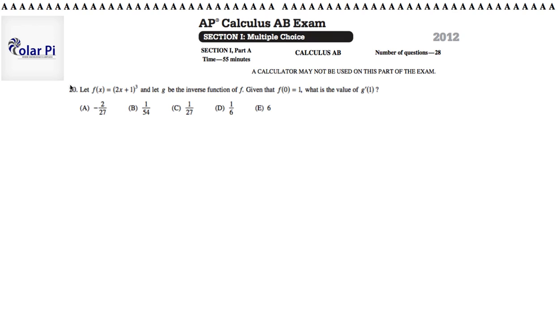Hey y'all, so in this video let's go through problem 20. Problem 20 says let f equal that and g be the inverse function of f. So g is equal to f inverse of x. Given that f of 0 is equal to 1, what is the value of g prime of 1?